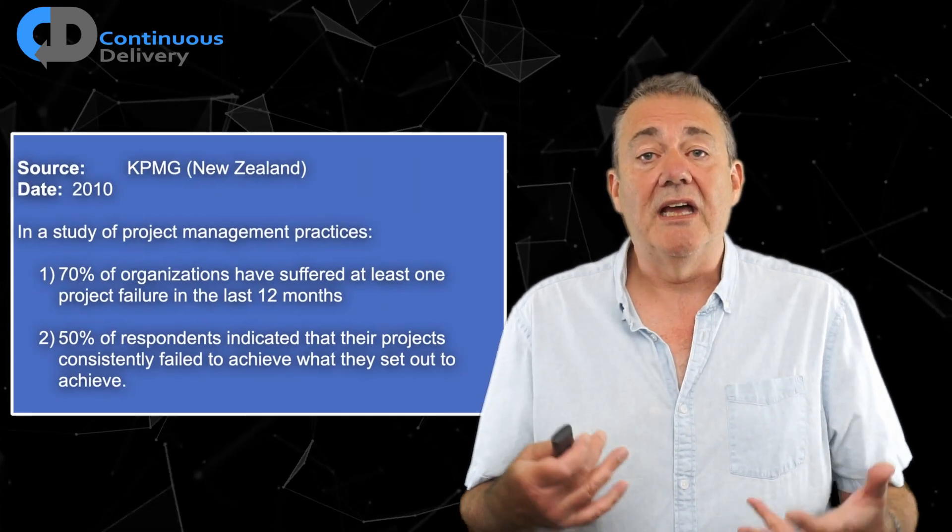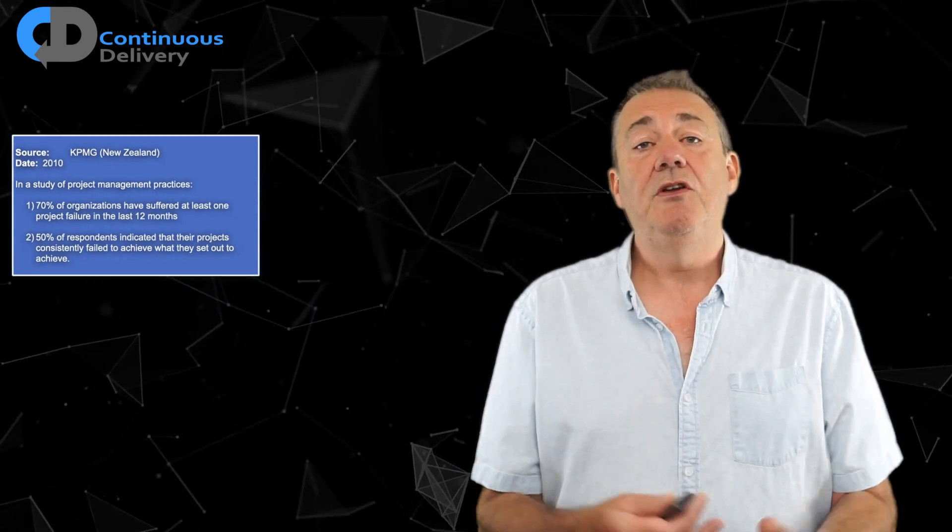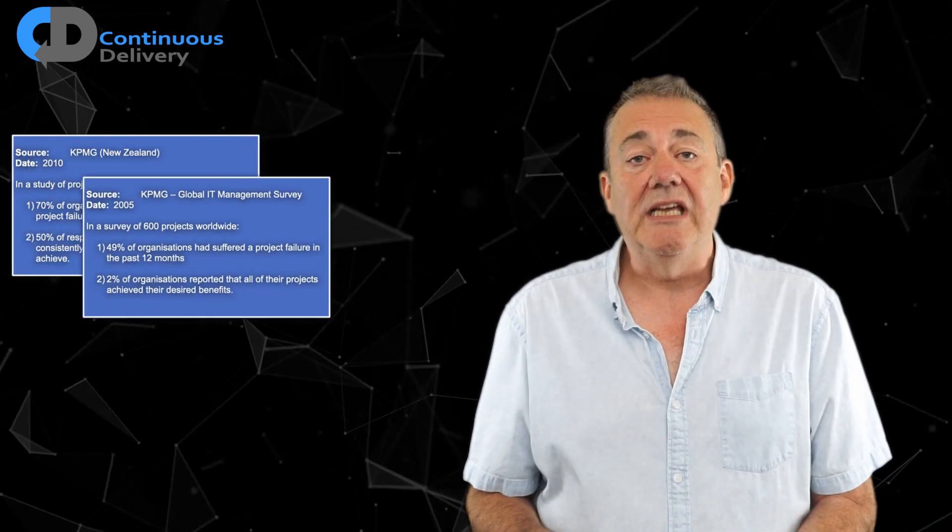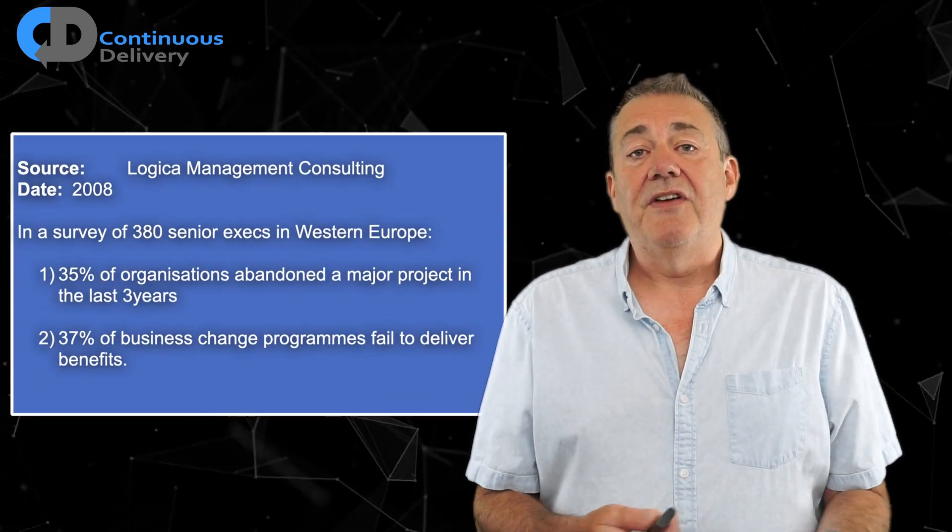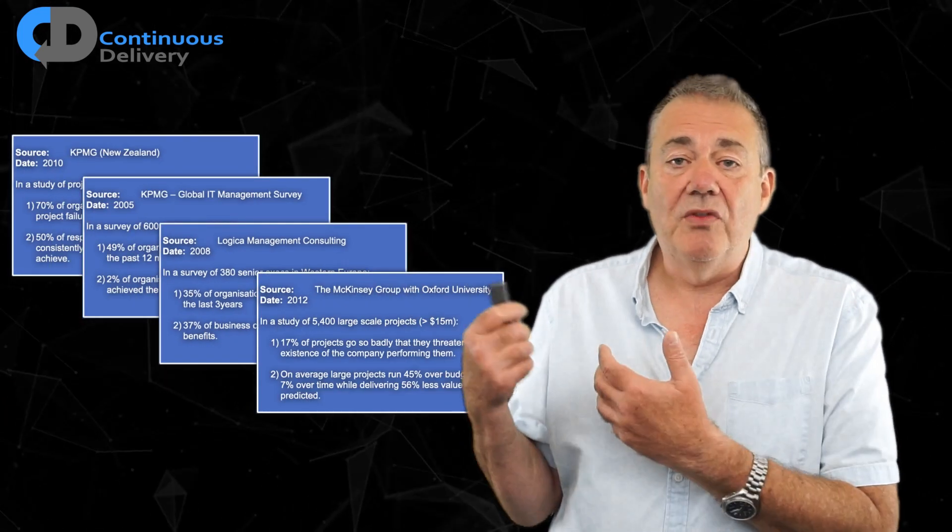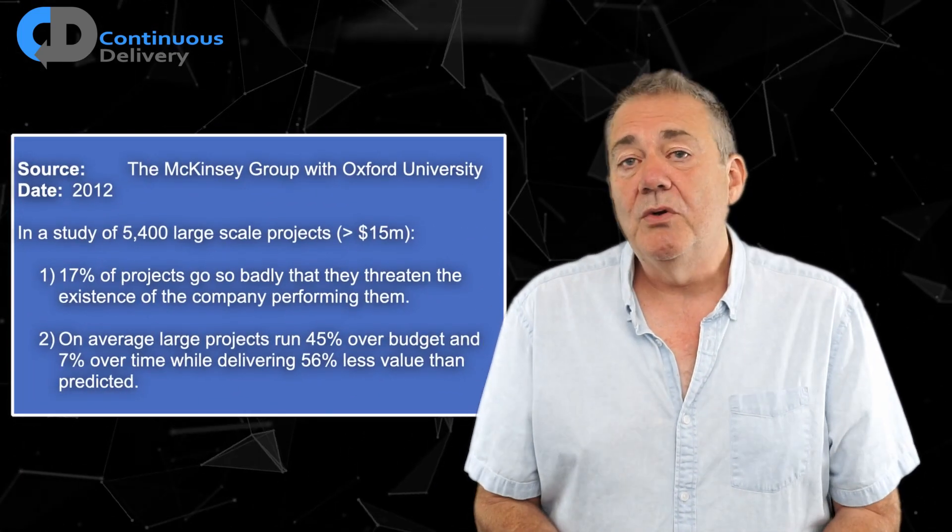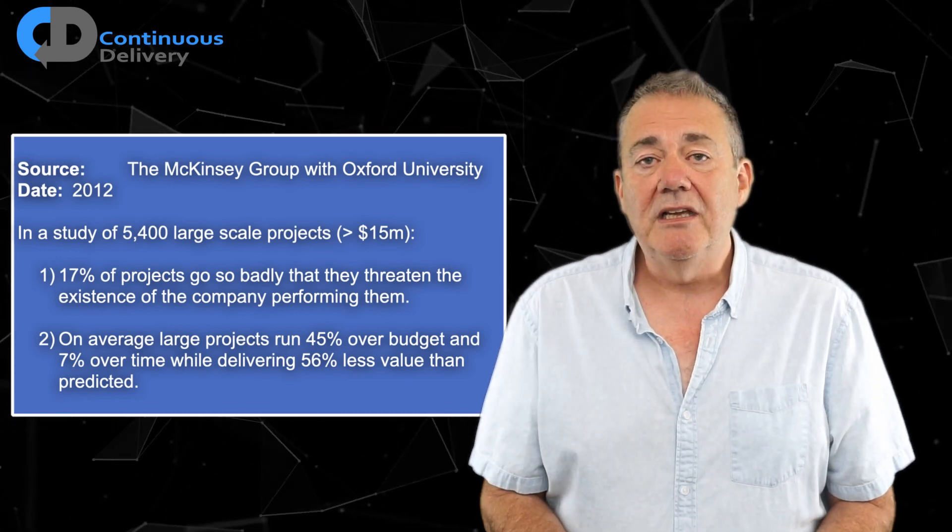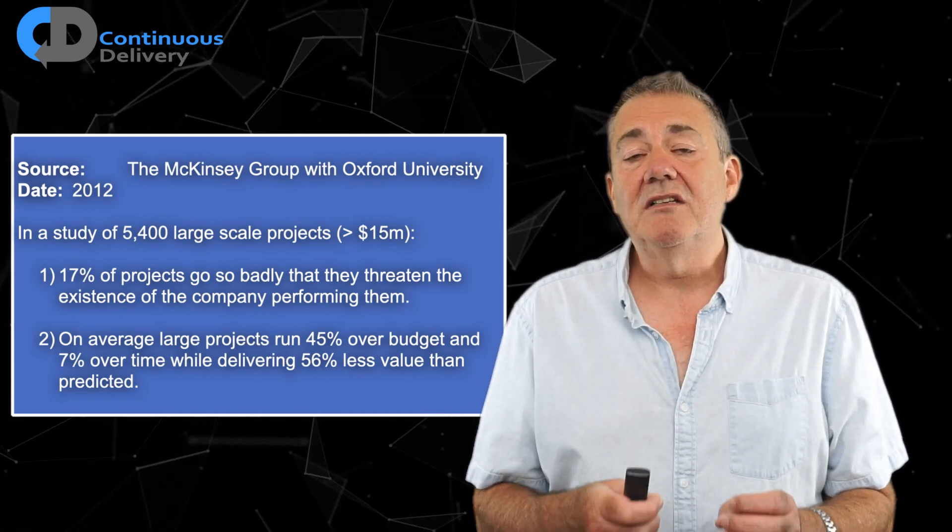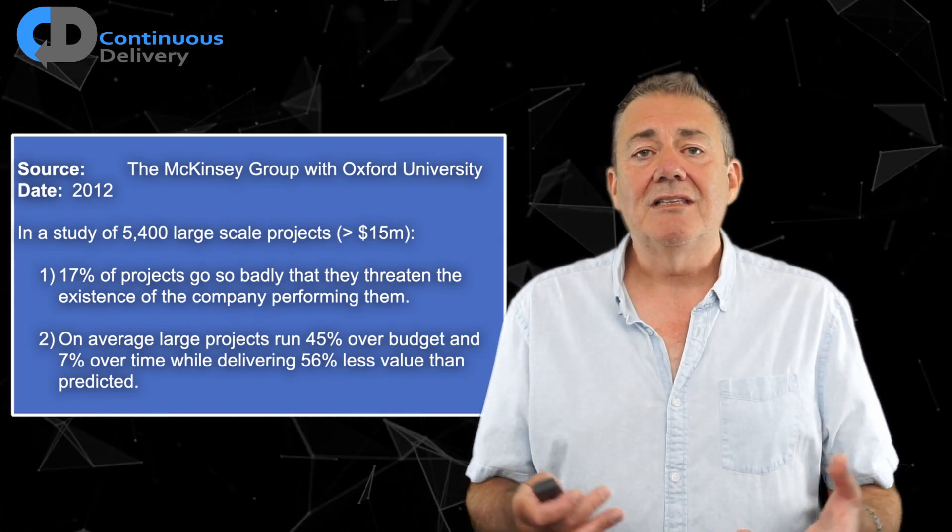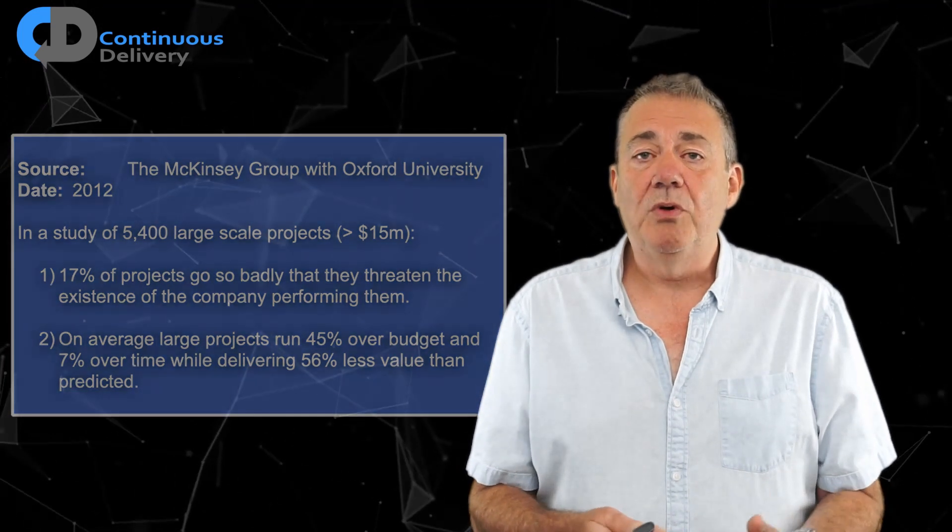Companies with a more traditional approach to software development have had a very different experience of development as a practice - it's been problematic. If you look at the data that analyzes the performance of software projects across our industry, it tends to tell a tale that's fairly dismal. In this example, companies building large systems with budgets of over $15 million - 17% of those projects go so badly that they threaten the existence of the businesses that began them. That's a staggering record of poor performance.